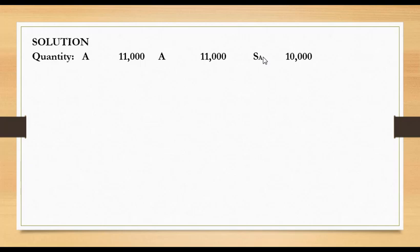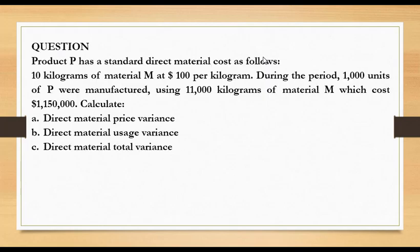To get the standard quantity for actual output: the question tells us we need 10 kilograms of material M to make one unit of product P, and we actually made 1,000 units. So 10 times 1,000 gives us 10,000 kilograms. We are also given the actual cost of materials — $1.15 million — and the actual quantity of materials used — 11,000 kilograms.